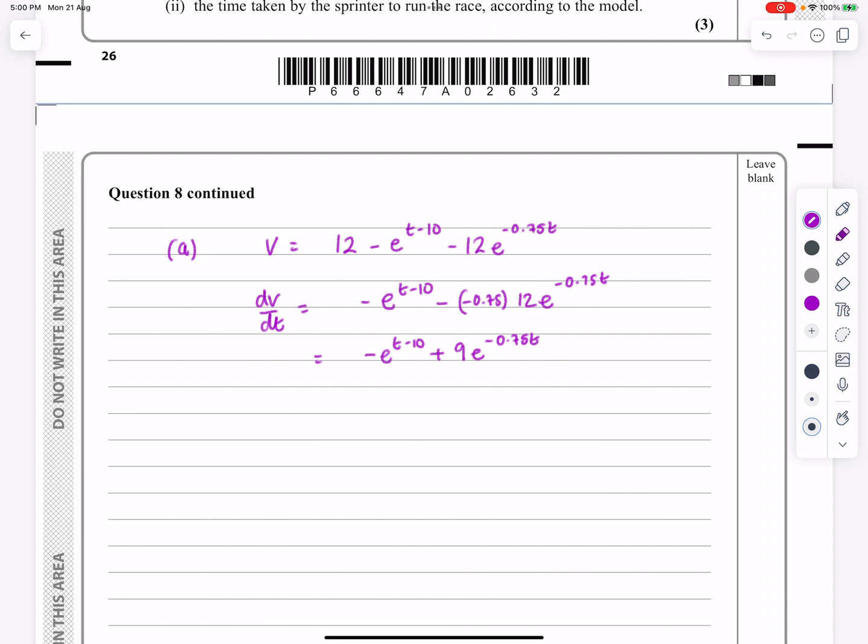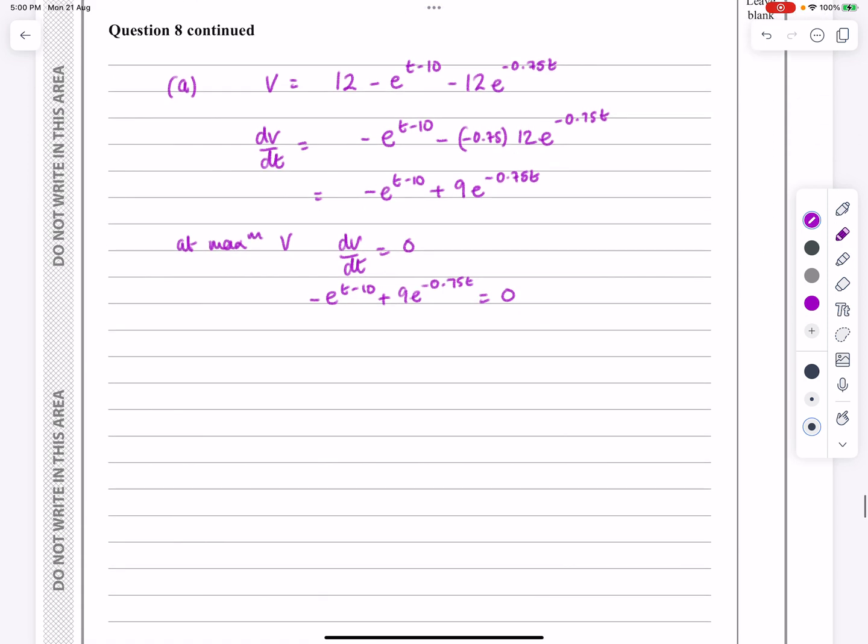Once we've got that, we're trying to find the maximum. So at maximum velocity, dv by dt is equal to 0. So this thing is going to be equal to 0. And again here, following on from exactly the same sort of thought process, when I'm doing this, even though this looks horrible, all I'm going to be using is the idea of powers.